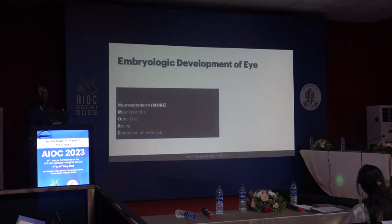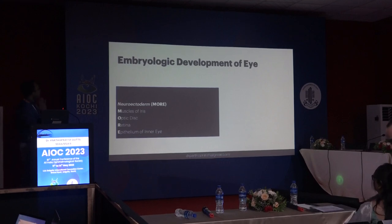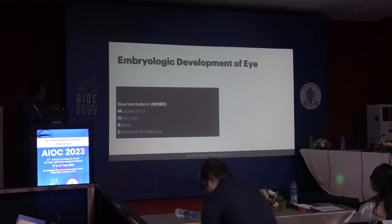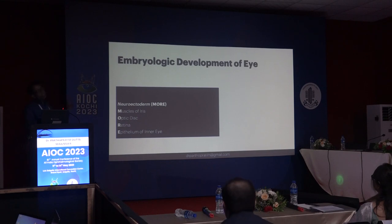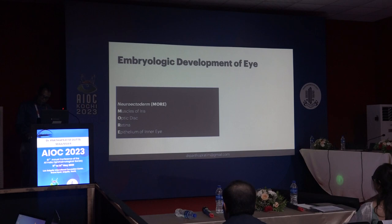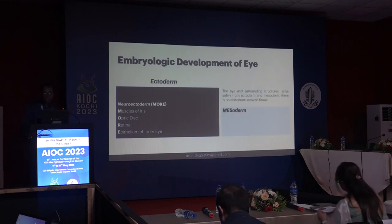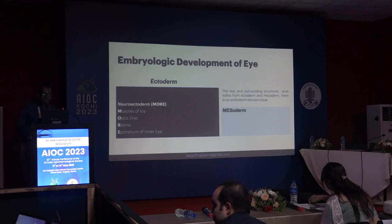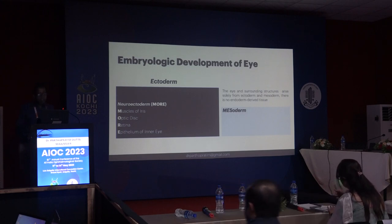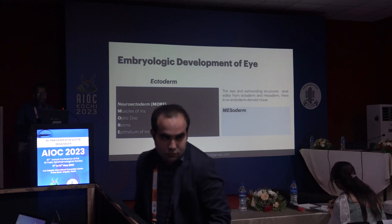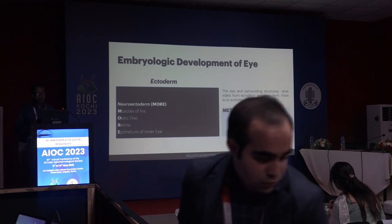N for neuroectoderm. Structures derived from neuroectoderm can be remembered with the mnemonic MORE: M for muscles of the iris, O for optic disc, R for retina, and E for epithelium of the inner eye — as shown in the earlier slide on epithelium of the NRI.